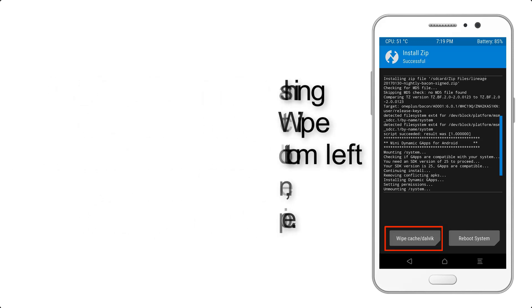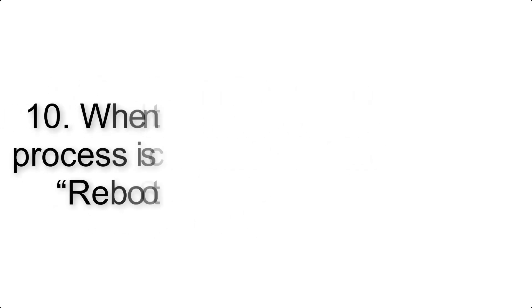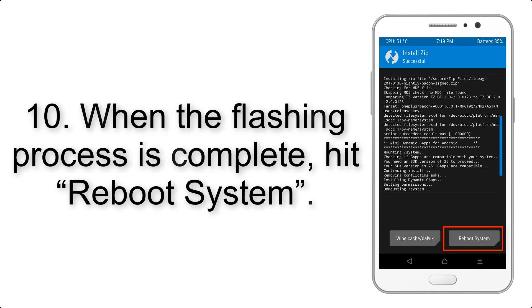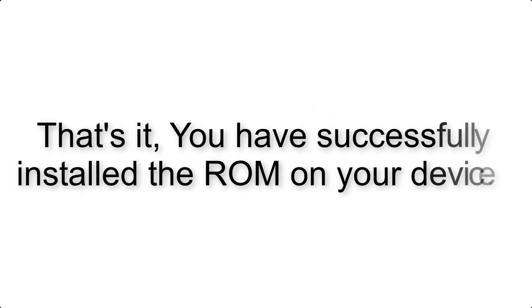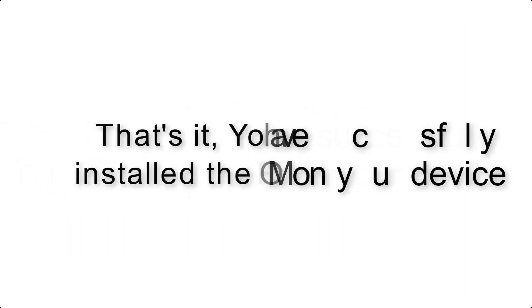Step 9: After GApps flashing completes, select Wipe Cache and Dalvik from the bottom left side of the screen and swipe to wipe. Step 10: When the flashing process is complete, hit Reboot System. That's it — you have successfully installed the ROM on your device.